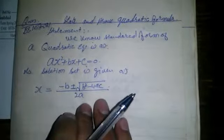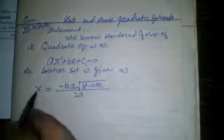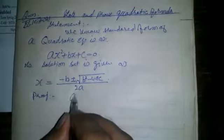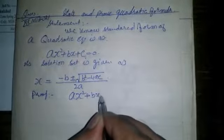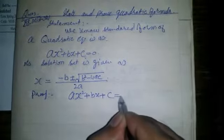Now we need its proof. Let's prove. Ax² + Bx + C = 0.